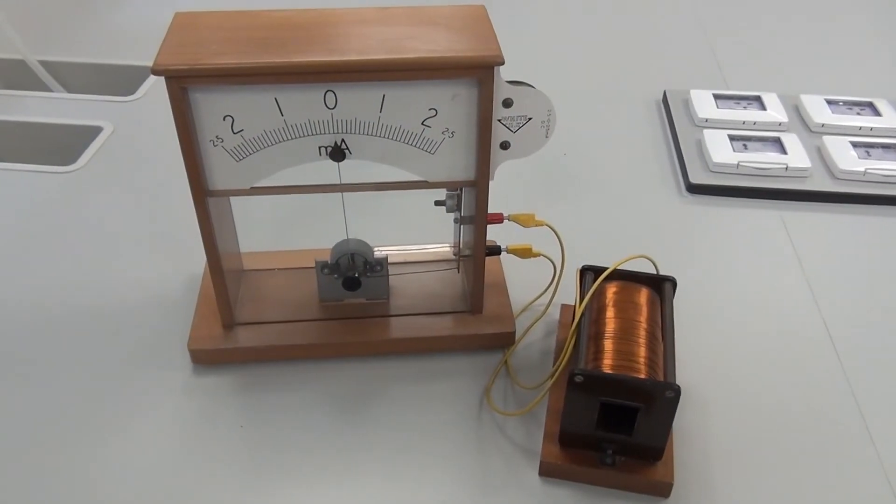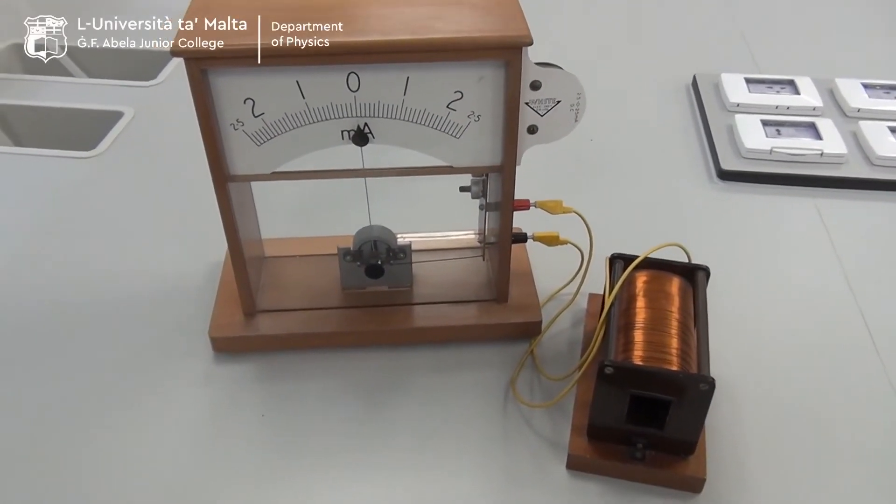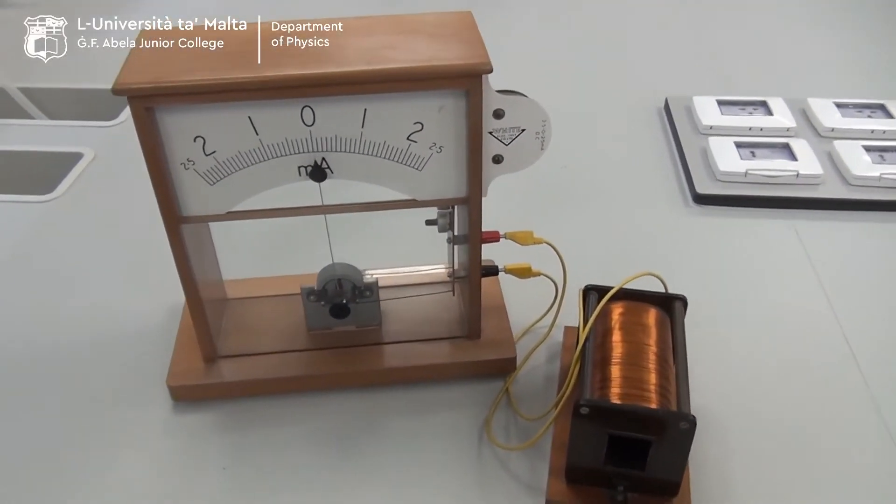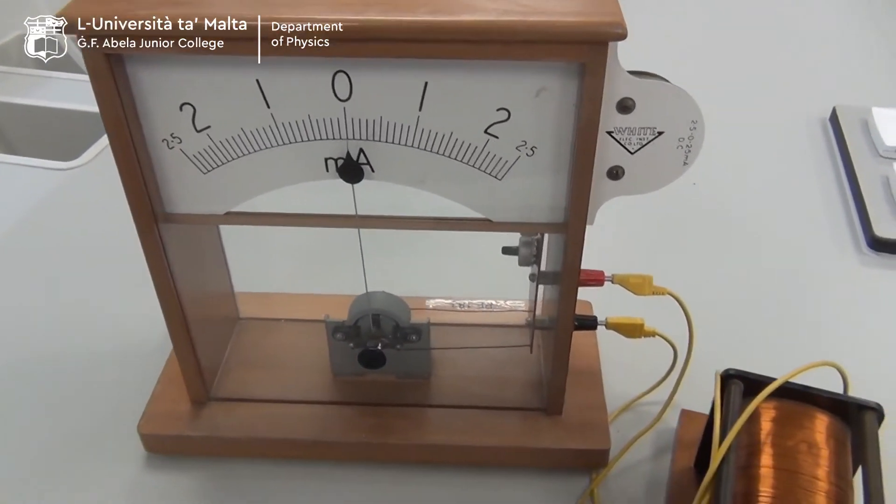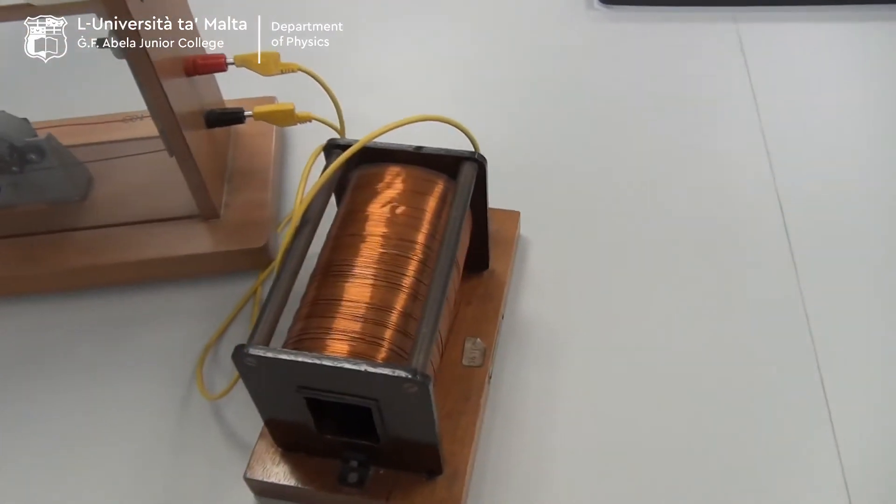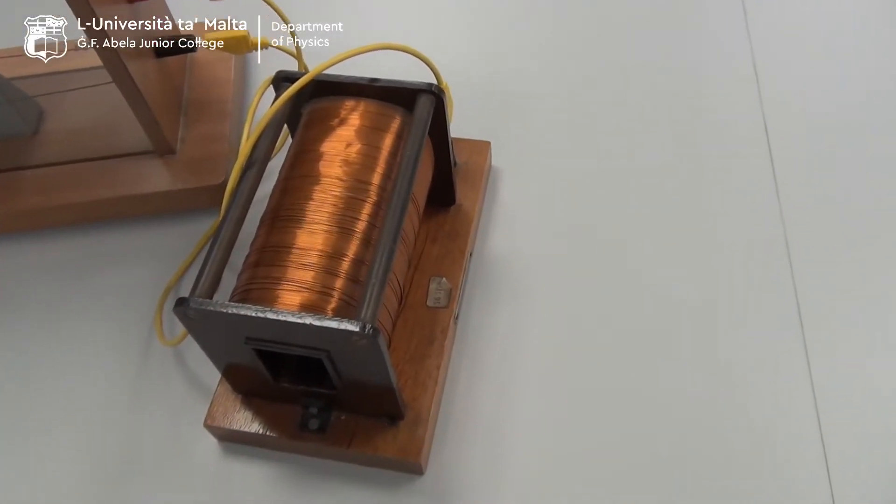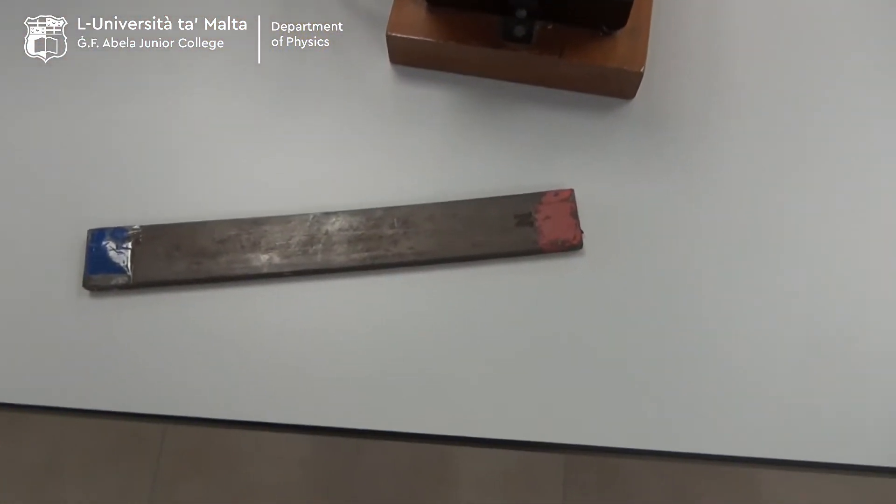In this setup we also shall demonstrate the laws of electromagnetic induction. We use a center zero galvanometer, a coil with many turns, and a permanent magnet.